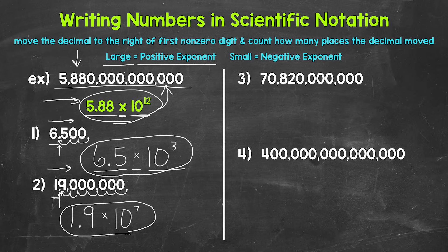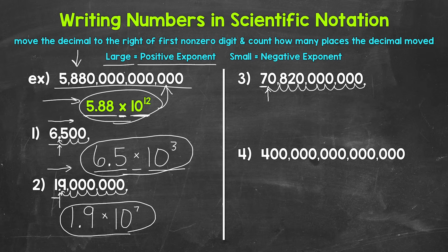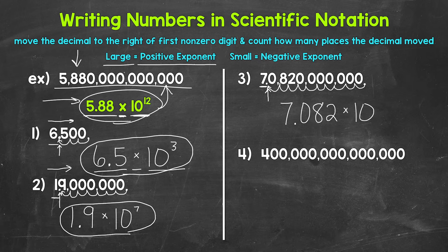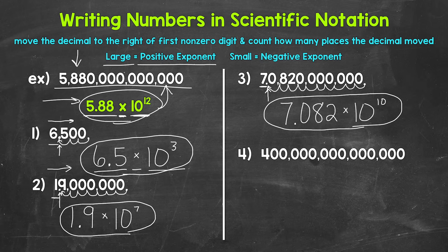Moving on to number three, let's write this number in scientific notation. We need to find that first non-zero digit, which is going to be this seven right here. We need the decimal to the right of that — in between the seven and the zero. Now let's move it: once, twice, three times, four, five, six, seven, eight, nine, and ten. So we write this as 7.082 — we leave all of those zeros to the right off — times our power of 10, which is going to be 10 to the power of 10, since we moved that decimal 10 times.